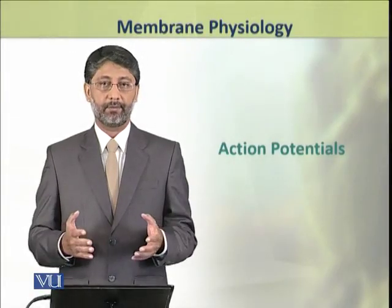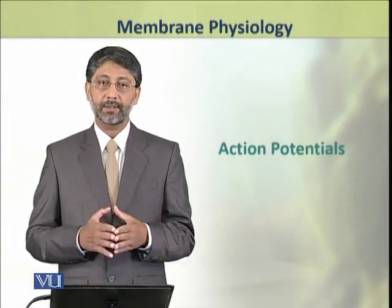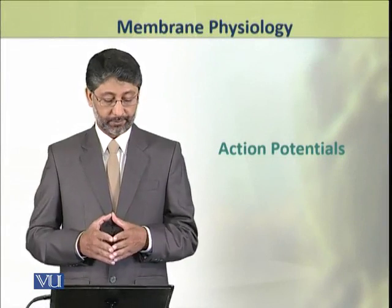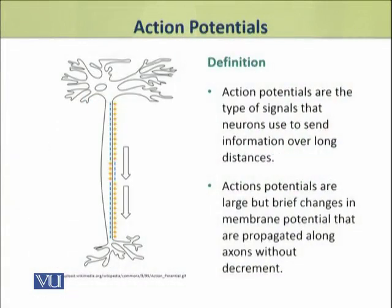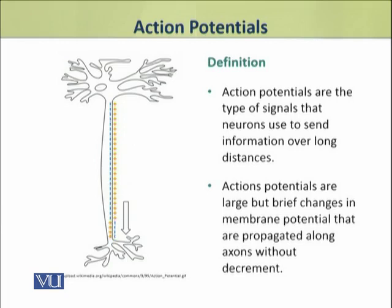Dear students, in this module we shall discuss action potentials. Action potentials are the type of signals that neurons use to send information along the nervous system for long distances. They are brief but large changes in membrane potential that are propagated along the axon without decrement.